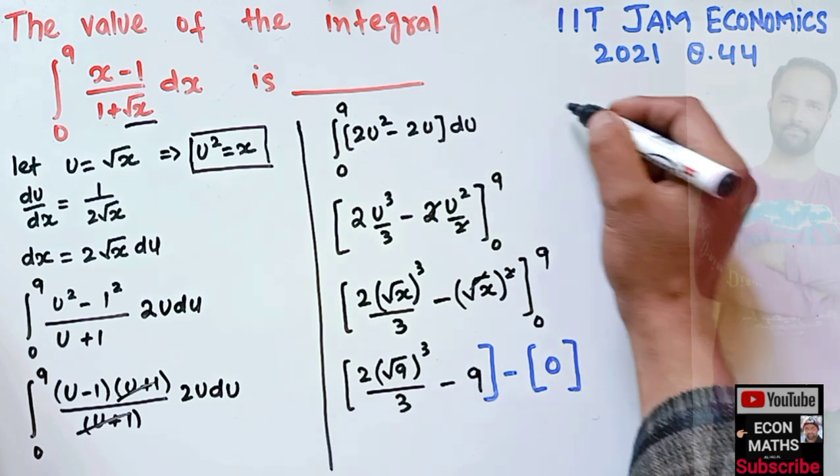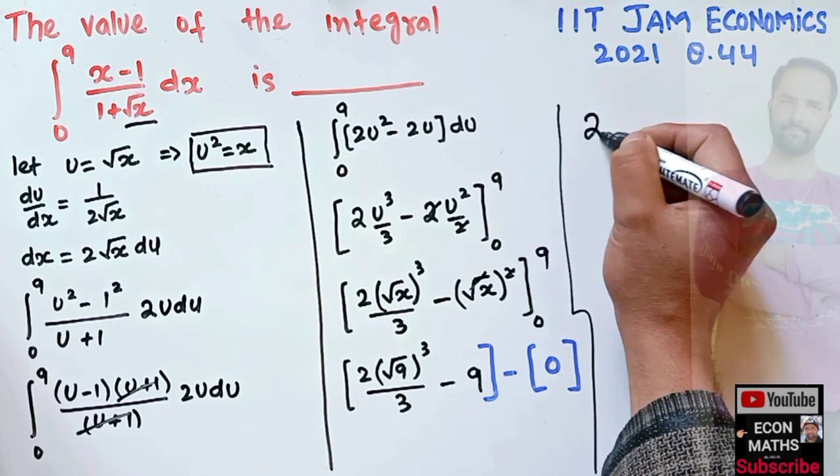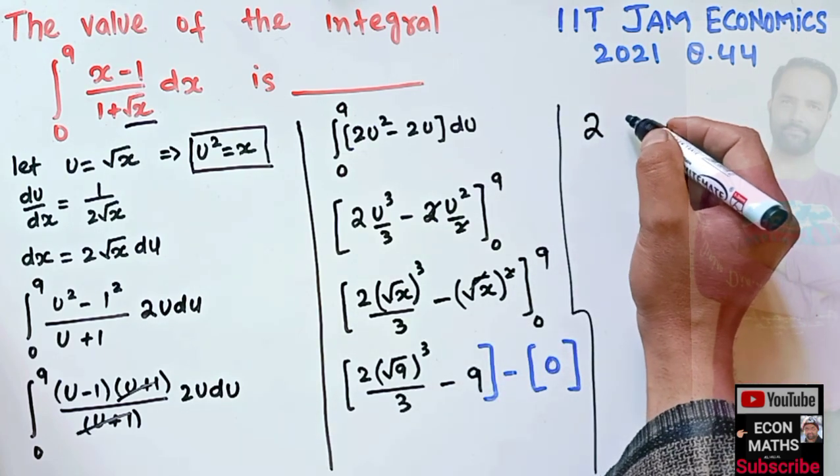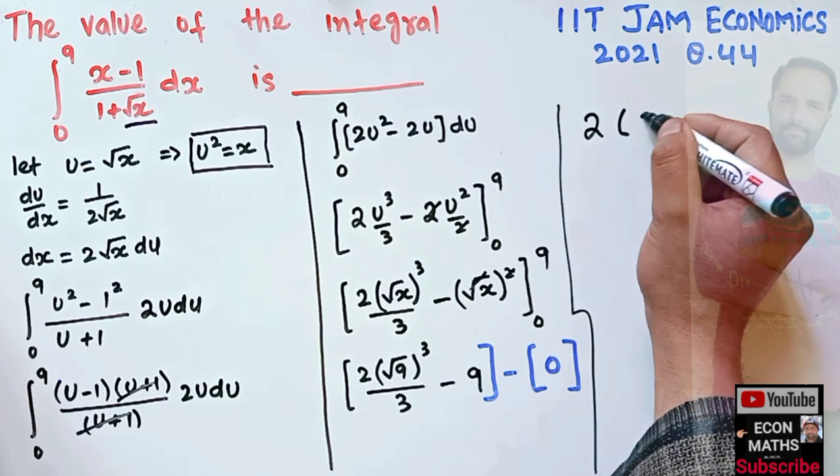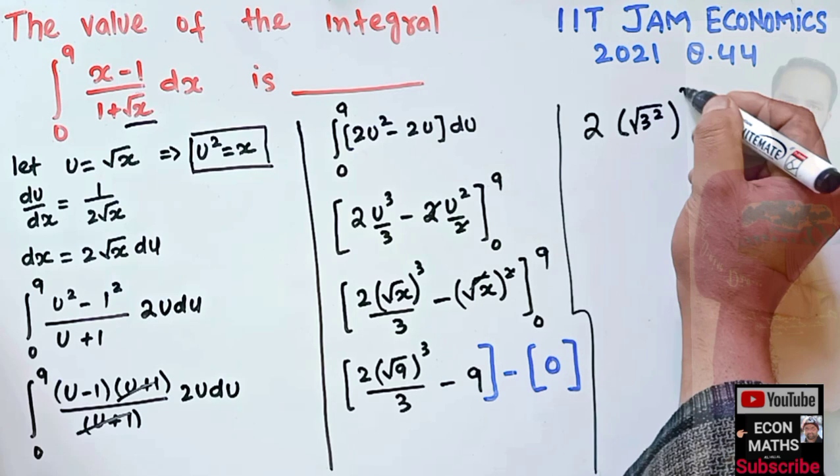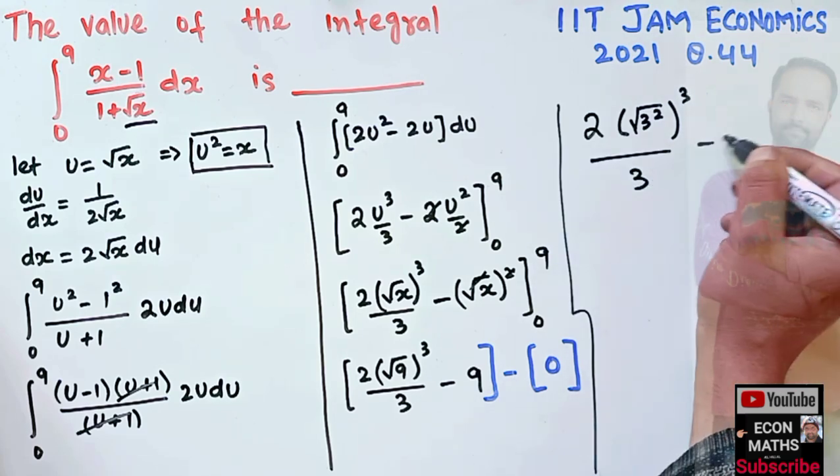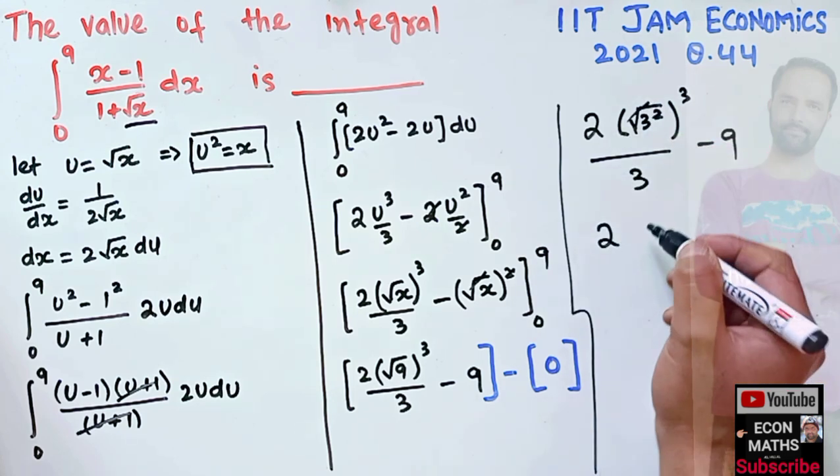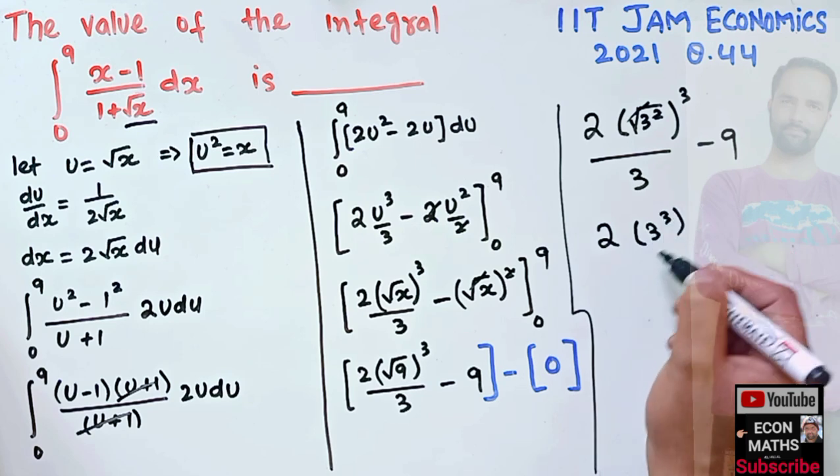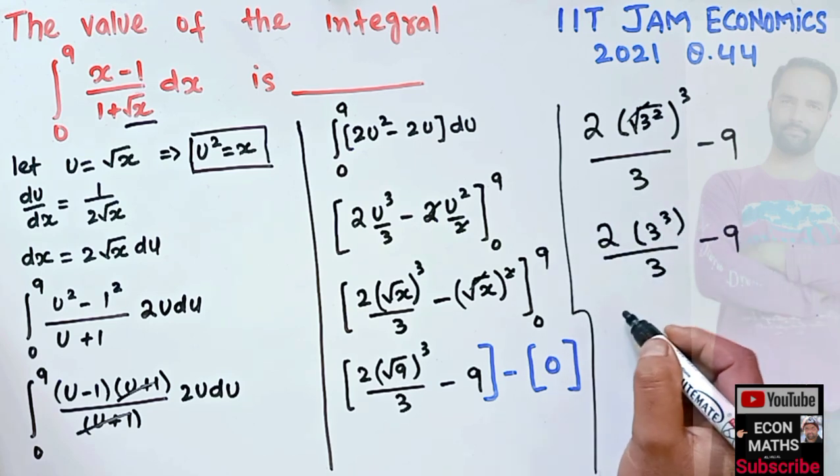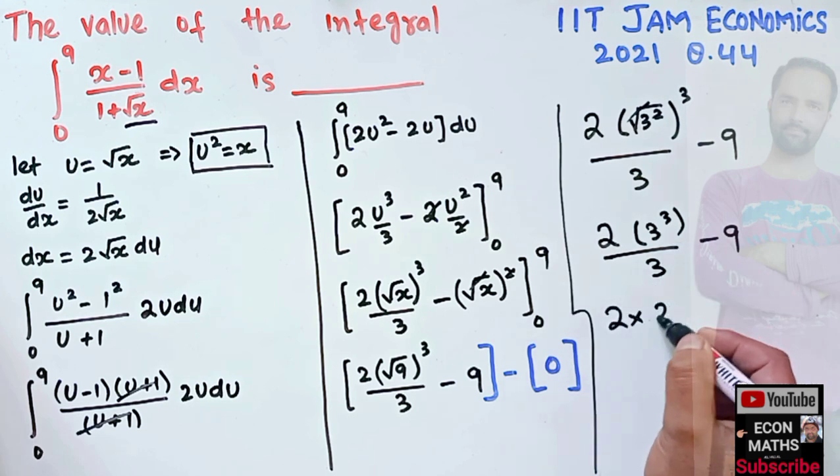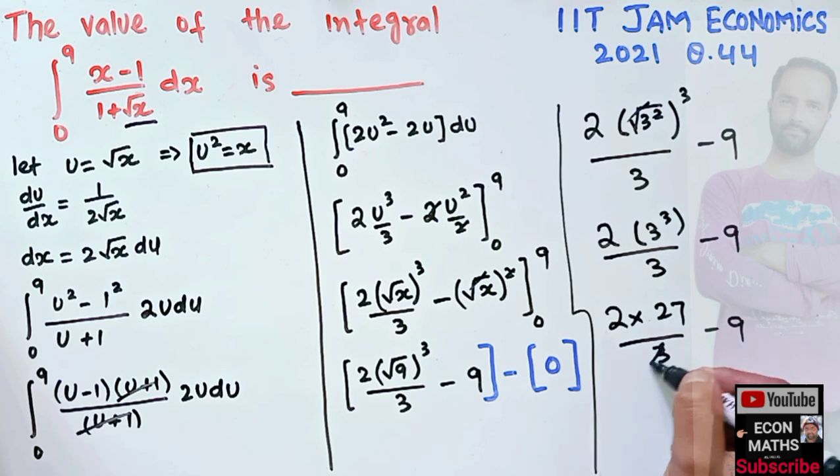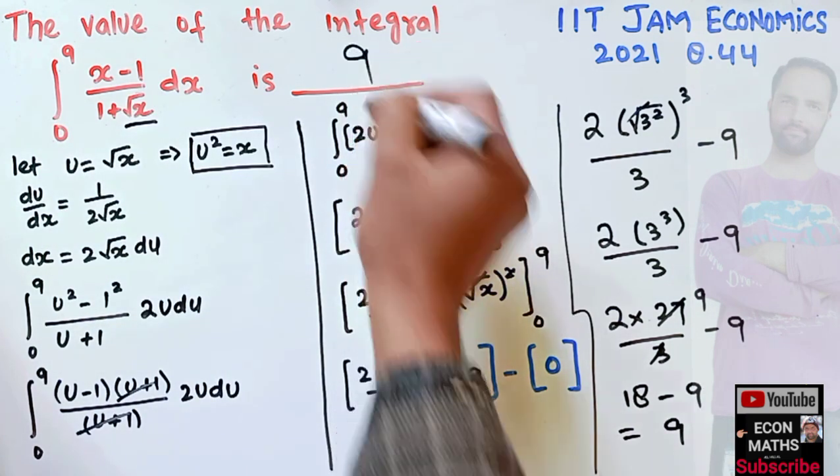Solving this, we have 2[(√9)³/3 - 9]. Since √9 = 3, this becomes 2[3³/3 - 9] = 2[27/3 - 9]. Now 3 cube is 27, so 27/3 = 9, giving us 2 times 9 = 18, minus 9, which is 18 - 9 = 9. This gives us the value of this definite integral is 9. I hope I make myself clear in this video, thank you.